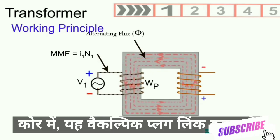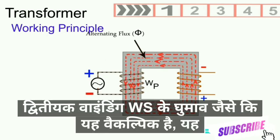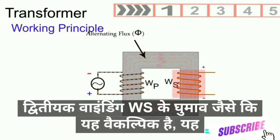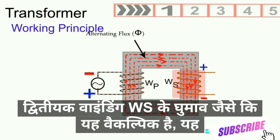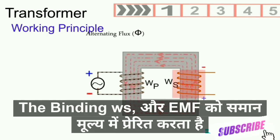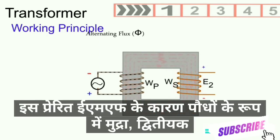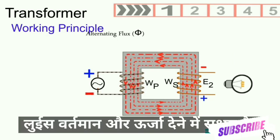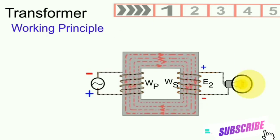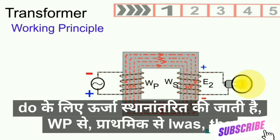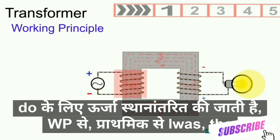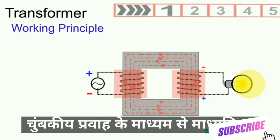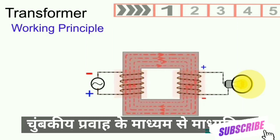This alternating flux links the turns of the secondary winding Ws. As this flux is alternating, it induces in the secondary winding Ws an EMF of the same frequency as the flux. Because of this induced EMF, the secondary winding Ws is capable of delivering current and energy. Therefore, energy is transferred from Wp, the primary, to Ws, the secondary, by means of magnetic flux.